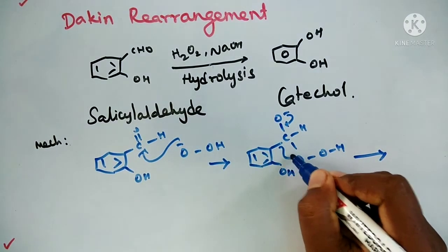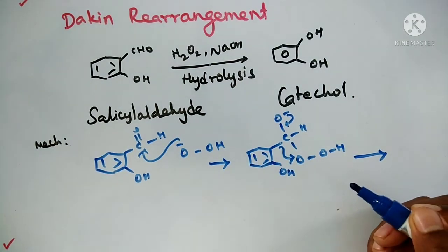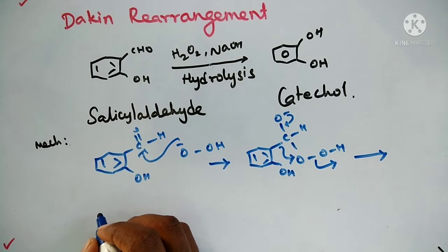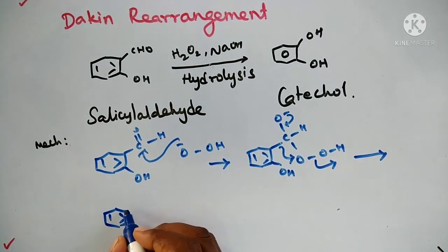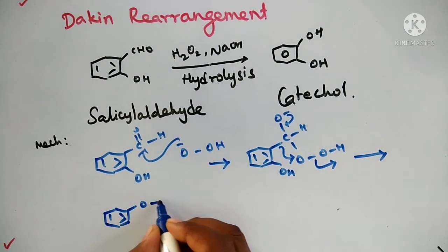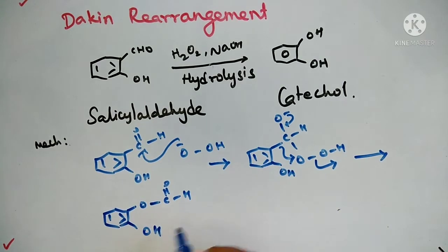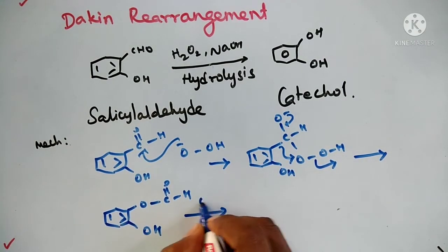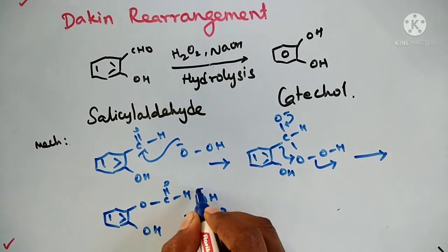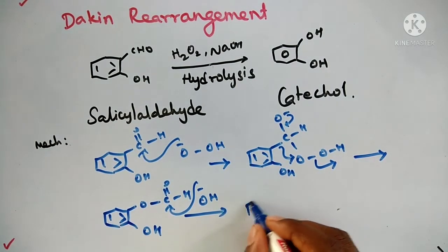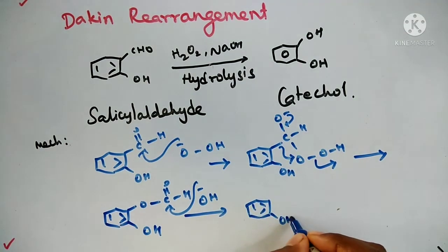So what you will get is bond O, bond C double bond O, bond H, bond OH. Then hydrolysis, base hydrolysis, what you will get is bond OH, bond OH, bond O, bond C, bond O minus, bond OH, bond H.